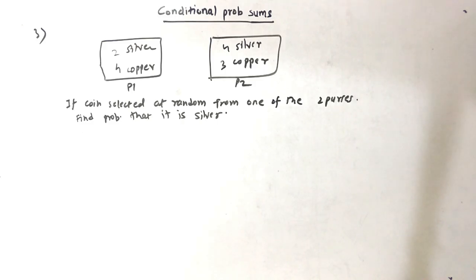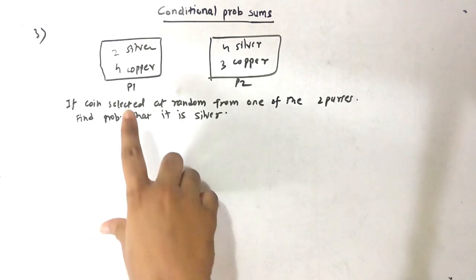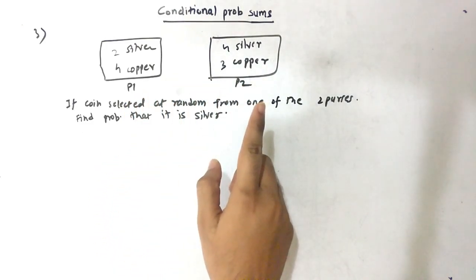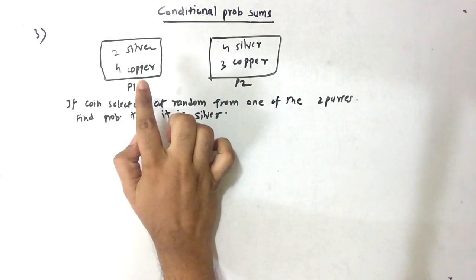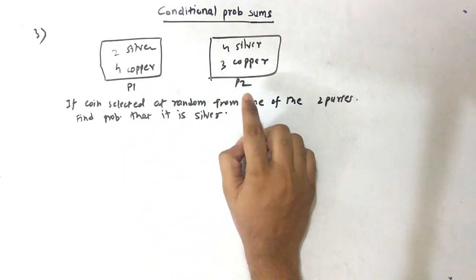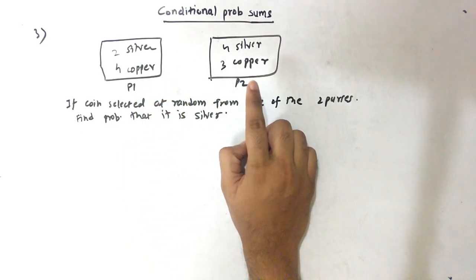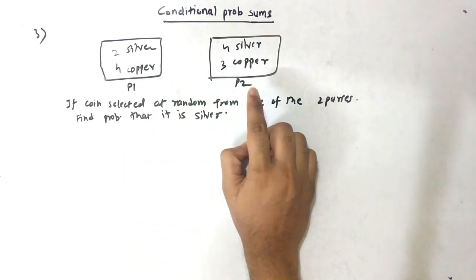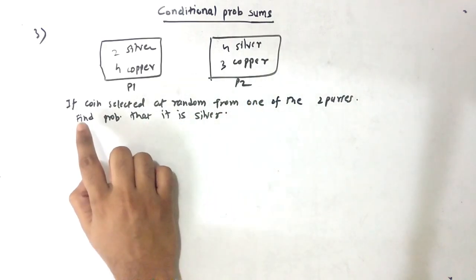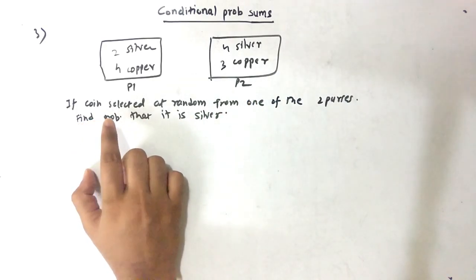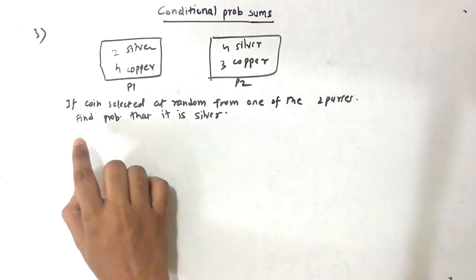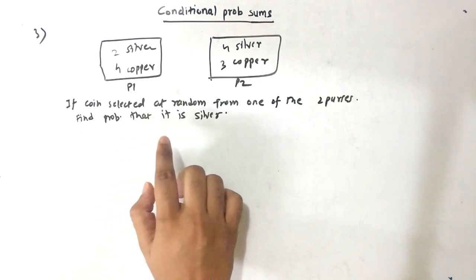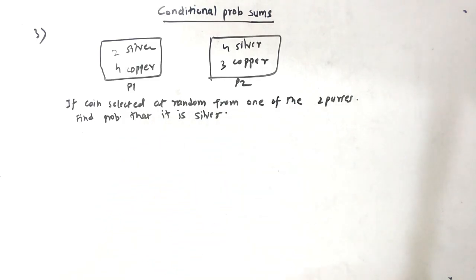The third question: we have two purses, Purse 1 and Purse 2. In Purse 1 there are 2 silver coins and 4 copper coins; in Purse 2 there are 4 silver coins and 3 copper coins. If a coin is selected at random from one of the two purses, find the probability that it is a silver coin.